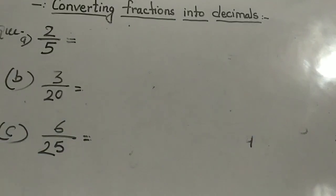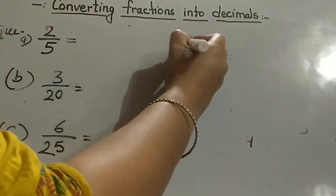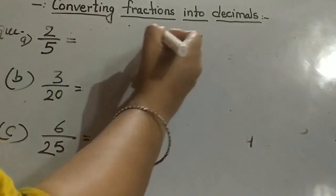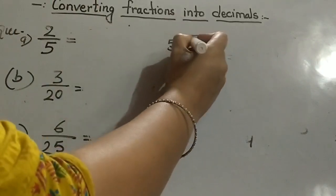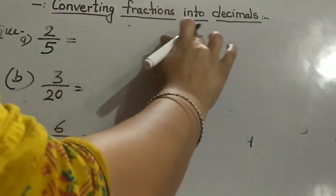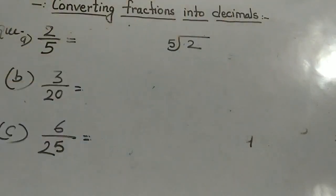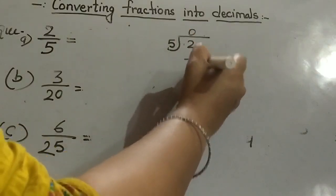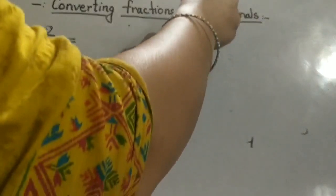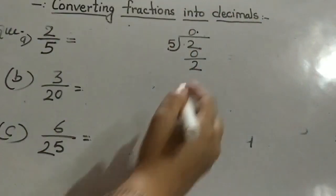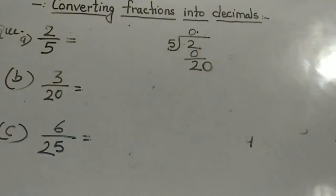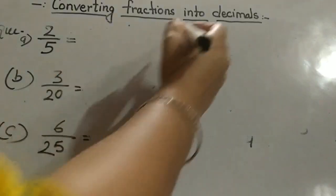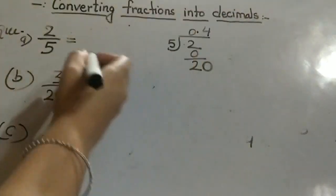Same questions we will do by another method. In this method we are dividing our numerator by our denominator. As you all know, 2 is smaller than 5, so 5 into 0 is 0. Point. As you are giving point in the quotient, 1 zero - we are getting free. Yes, so 5 times 4 are 20. So same answer we got.